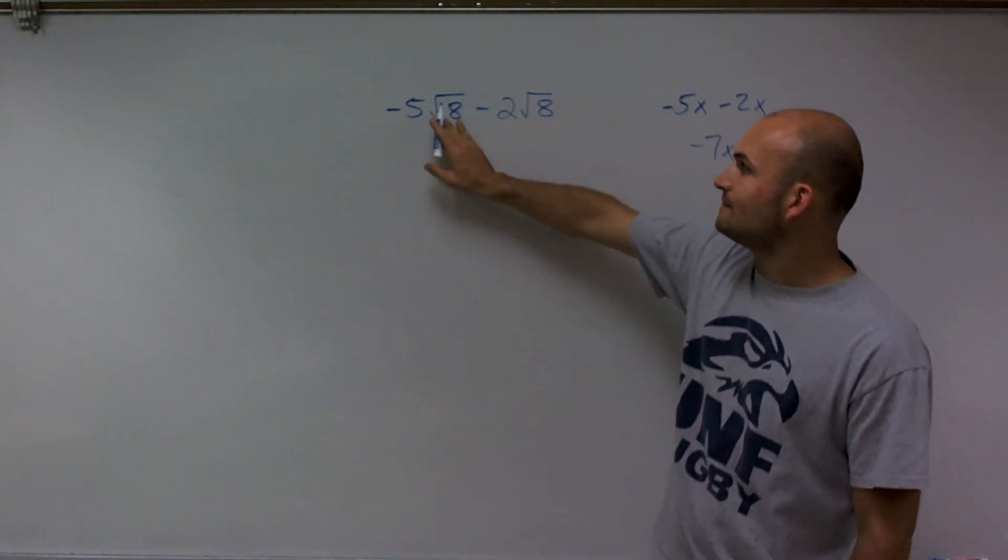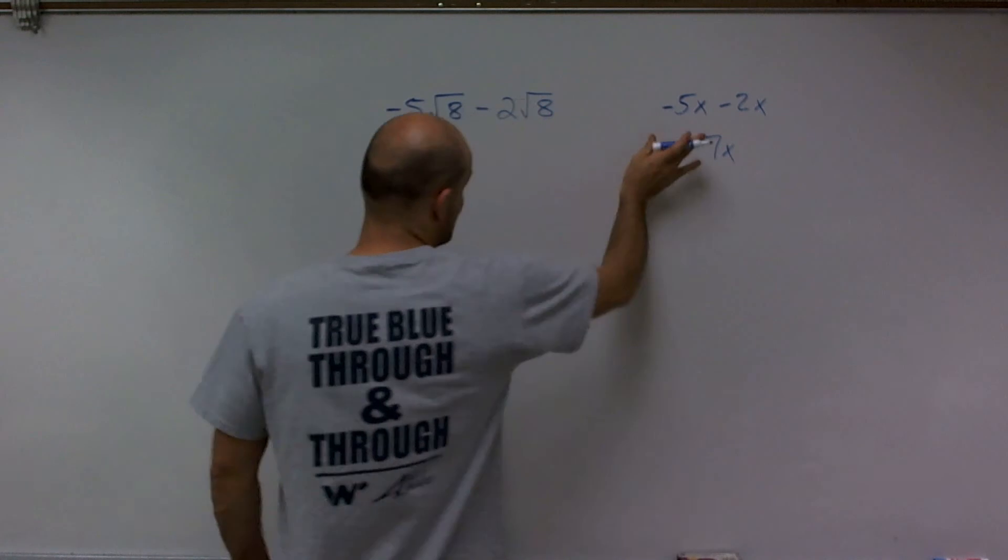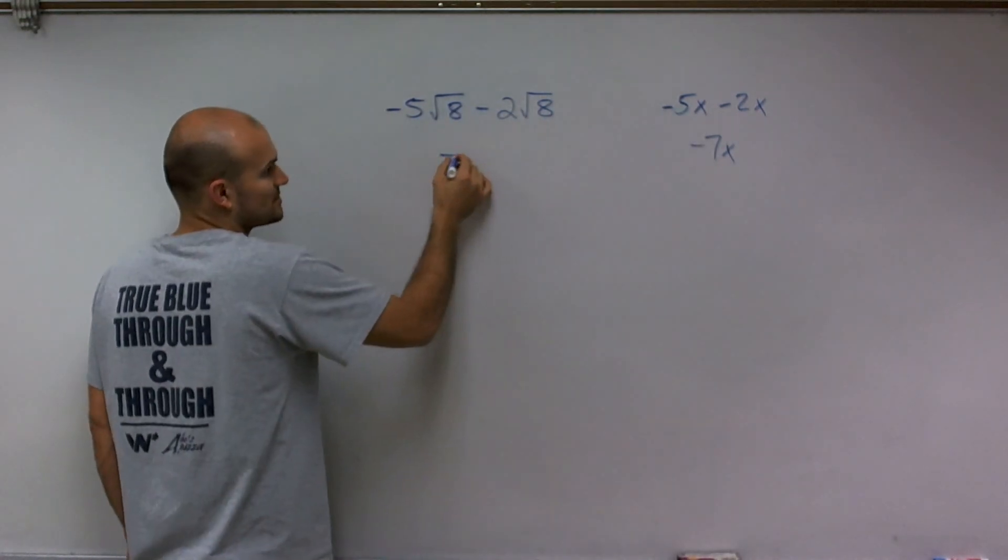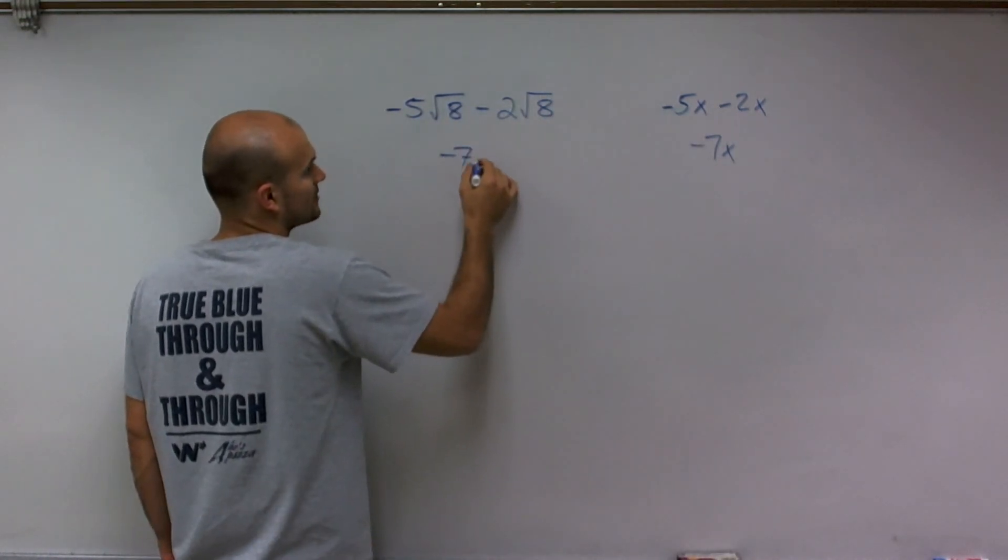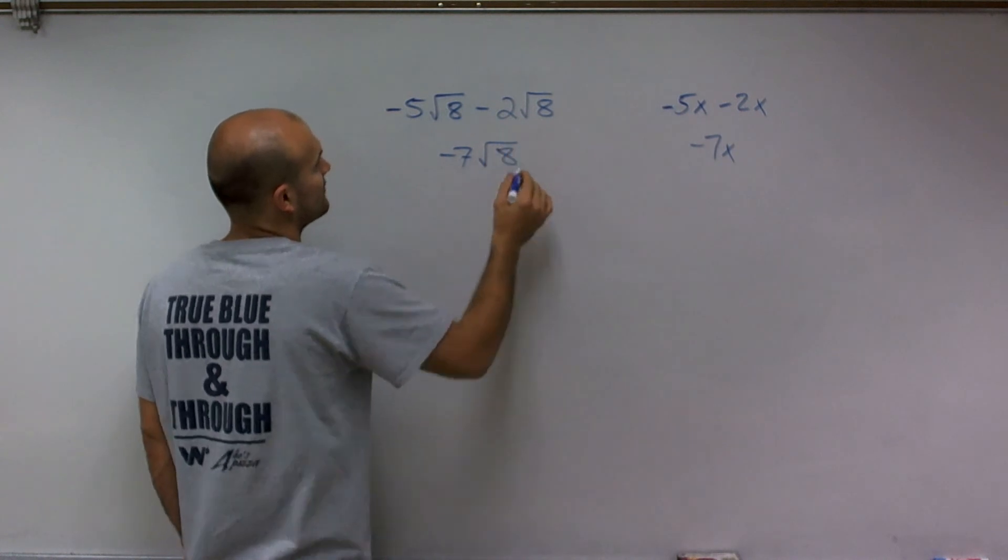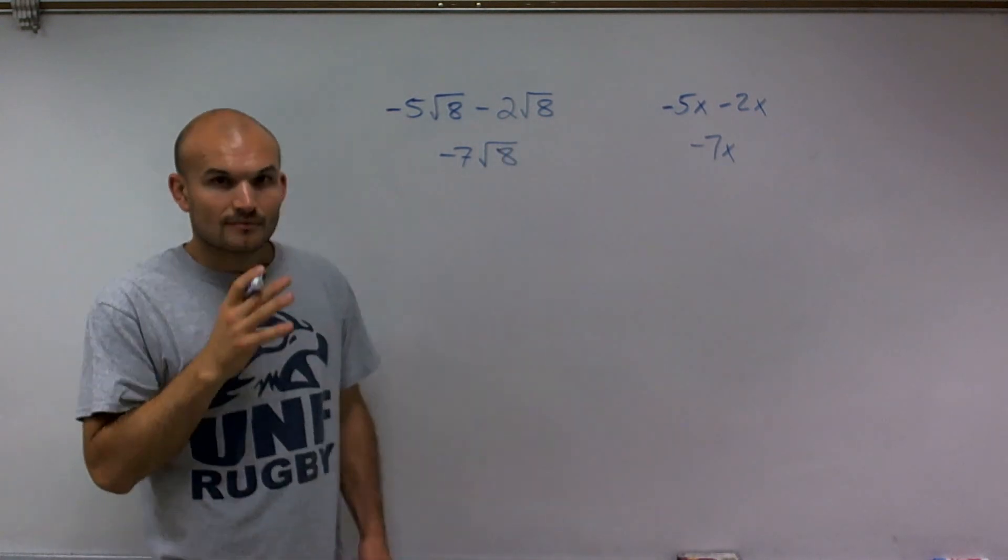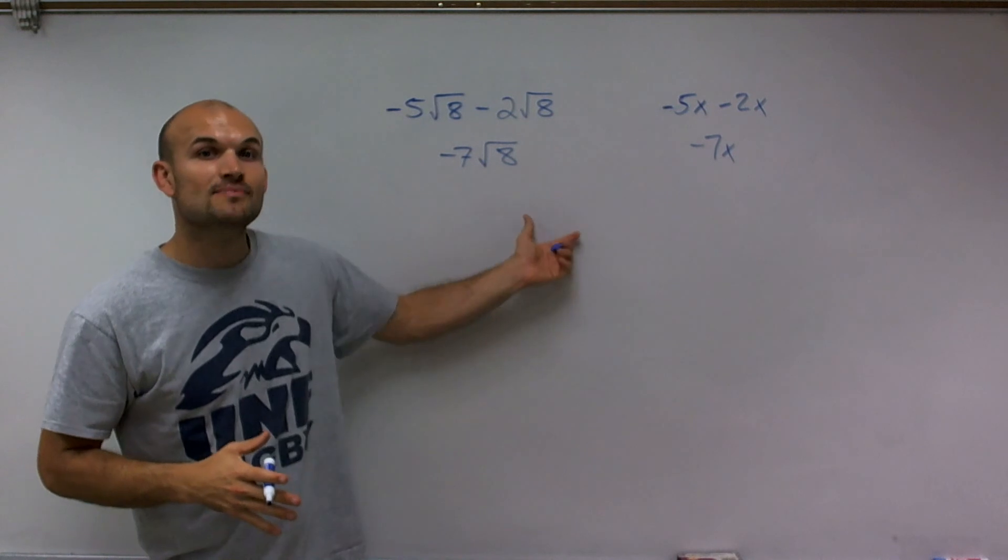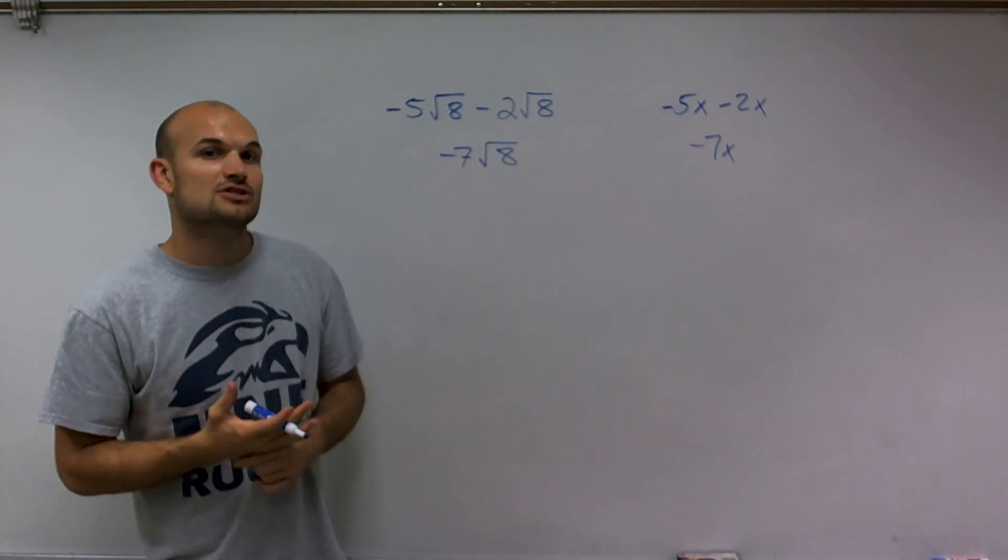So if I have negative 5 square root of 8 minus 2 square root of 8, I can simplify that very similar to that expression to negative 7 times the square root of 8. Now, it's really important for us to make sure that we can simplify our radicals as much as possible.